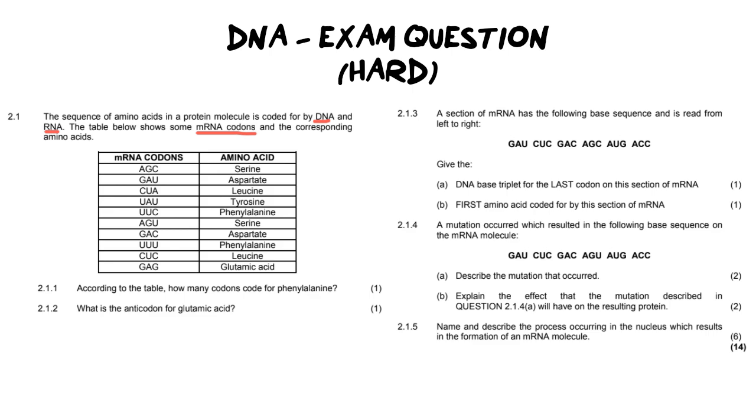According to the table, how many codons code for phenylalanine? Now they want to know can you actually identify all of them? So let's go through and see. We have phenylalanine here and we have one here and their codes are slightly different but there are two different codons and so therefore we have two. Easy answer, right?